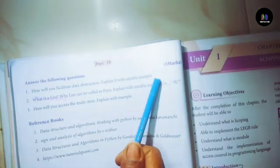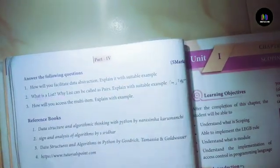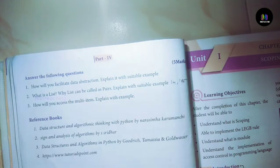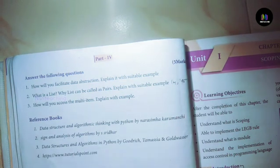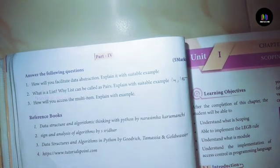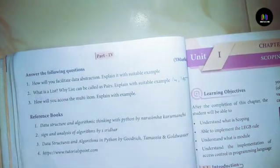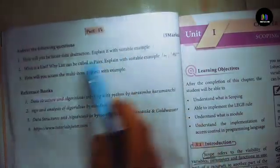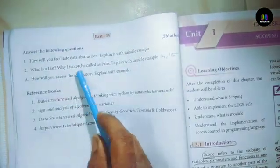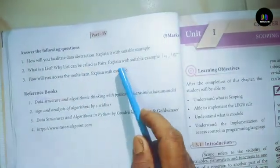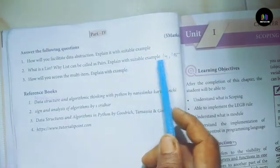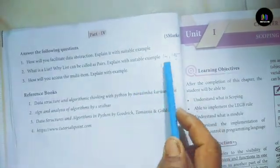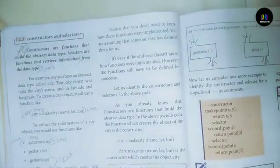Part 4: Answer the following questions. First one: How will you facilitate data abstraction? Explain with suitable example. Question number 2: What is a list? Why can list be called as pair? Explain with suitable example. Answer page number 14 and 15.